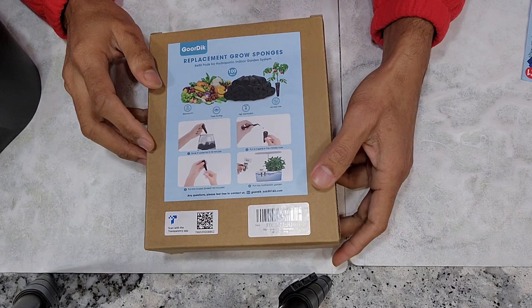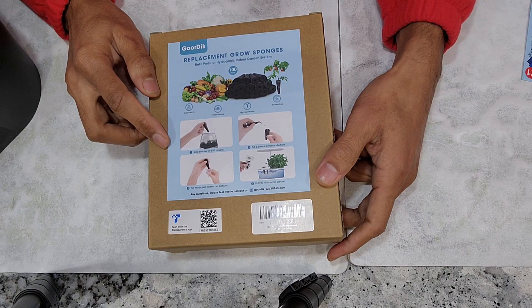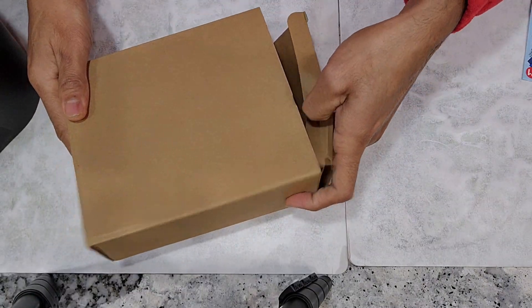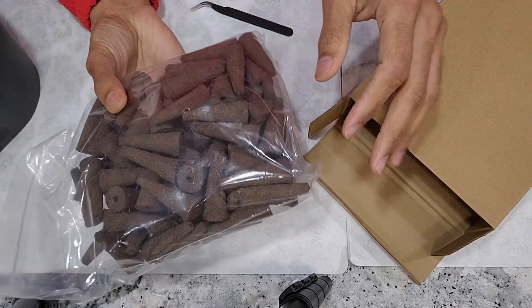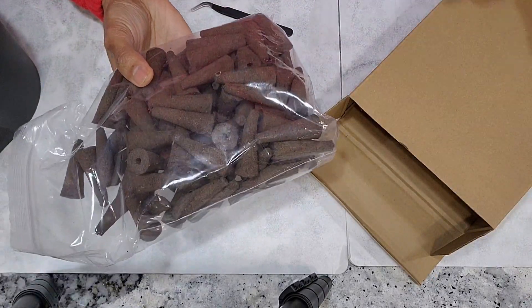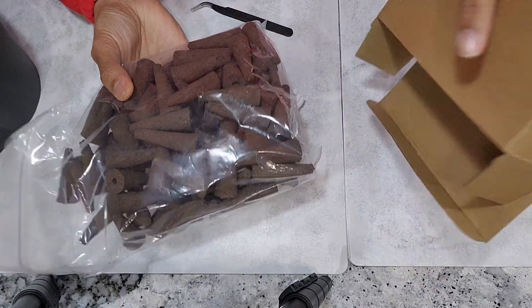Let's see how this is going to work and how the roots are going to go through these sponges and how durable it is. This is a 100 pack and I got it for about $15, which sounds like a very good price if it works.